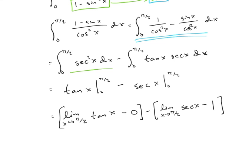So then we end up with a couple guys who look like they might be a problem. So I wrote these as the limit as x approaches pi over 2. Remember, we have cosine in the denominator. So cosine of pi over 2 is 0, so both of those guys are technically going to infinity.